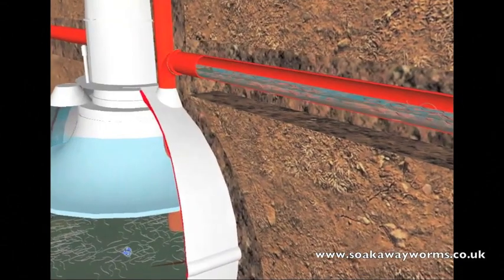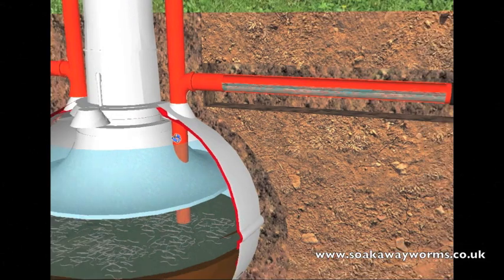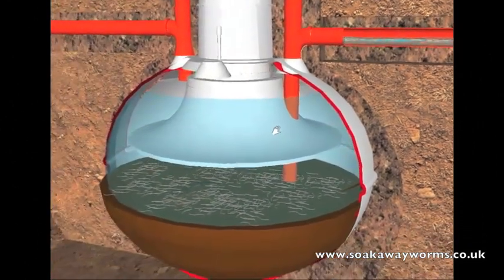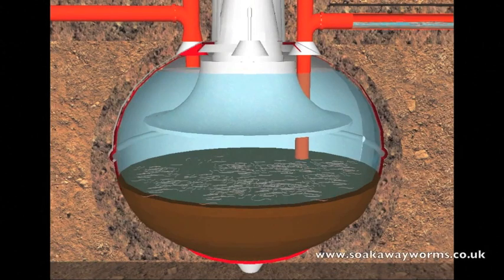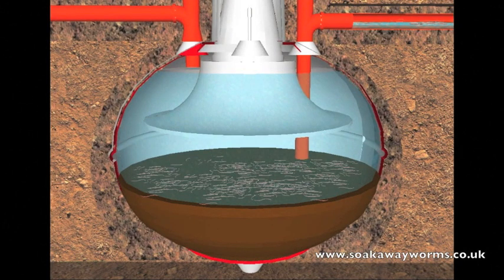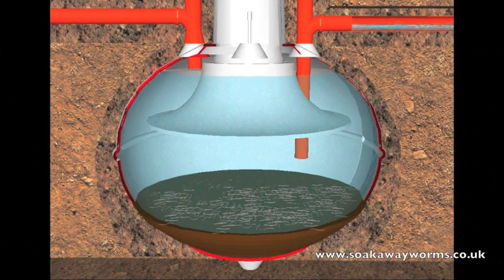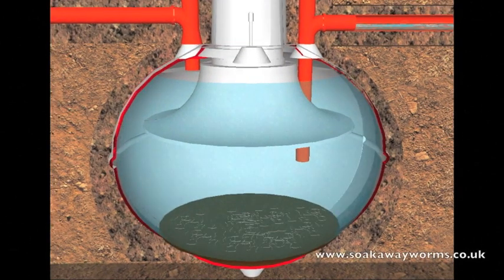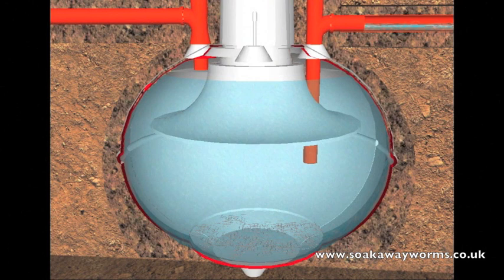Now this is where the soakaway worms really kick in and get clever. Remember at the outset we spoke about how people have to get their septic tanks emptied once or twice a year? Because the soakaway worms live in the bottom of the septic tank they eat all the sludge, so instead of having to get it emptied once a year, they reduce your septic tank emptying times to once every 10 to 15 years. So not only do they unblock your soakaway and keep it unblocked, they also keep your septic tank free from sludge and blockages, which means no more bills, no more repairs, and no more septic tank emptying.